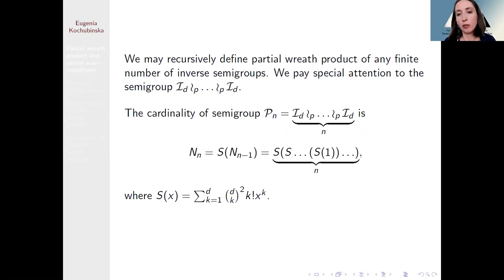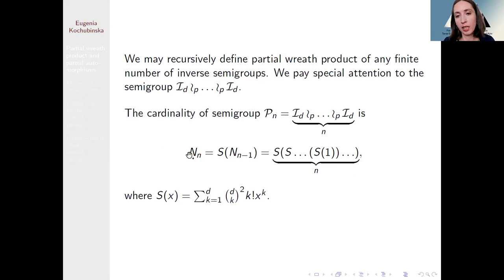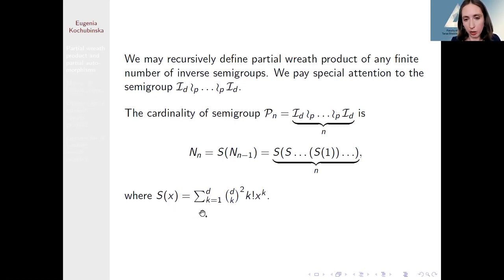To find the number of elements of the partial wreath product pn, we apply the recursion: take S(1), then S(S(1)), and so on — applying this recursion n times for n factors. The function S(x) is given by a formula, and if we put x equal to 1 we get the number of elements in the inverse symmetric semigroup.